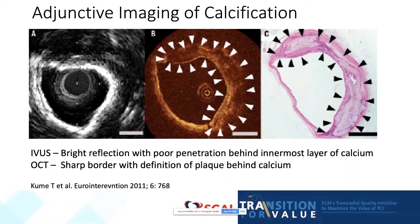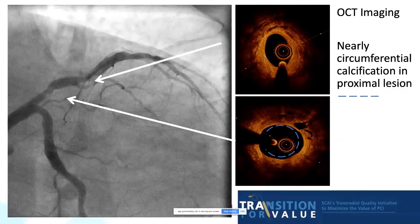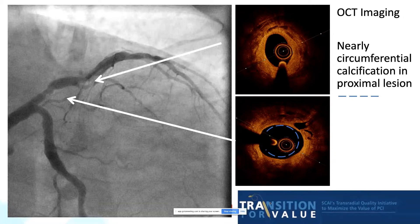We went back to our patient and performed OCT before we started. In the more proximal lesion, the patient has nearly circumferential coronary calcification with a bright border at the intimal layer. The second, more mid-vessel lesion again shows calcification; however, it is deeper in the vessel and not quite abutting the intimal layer.